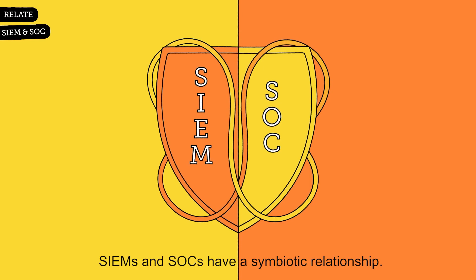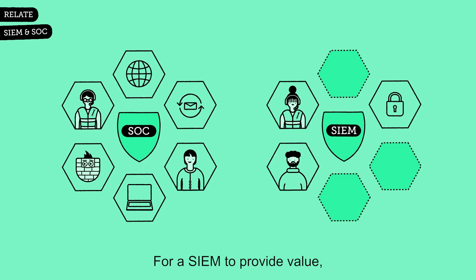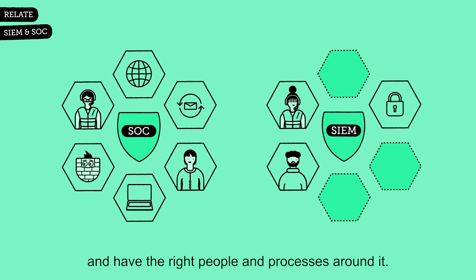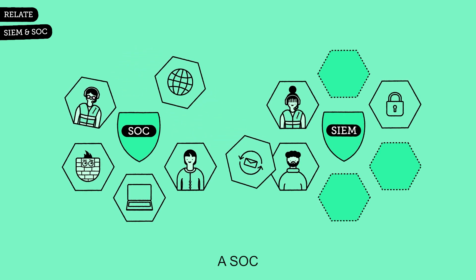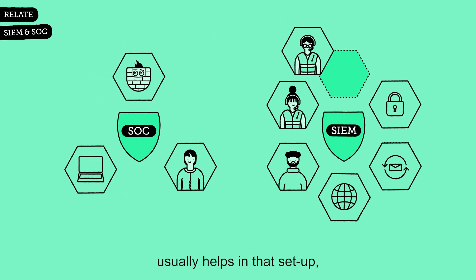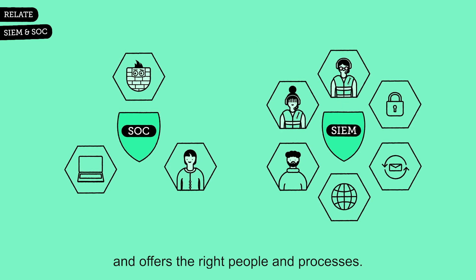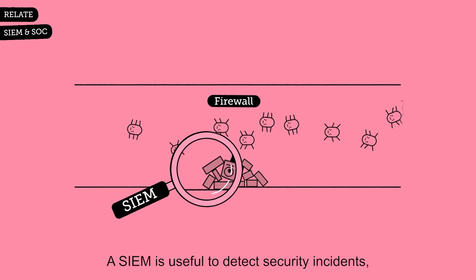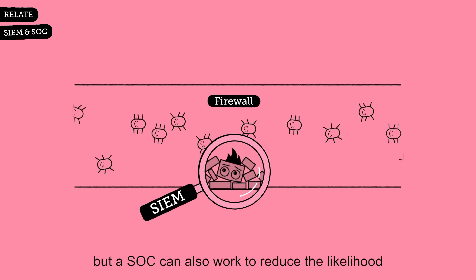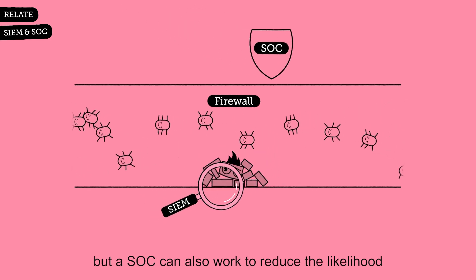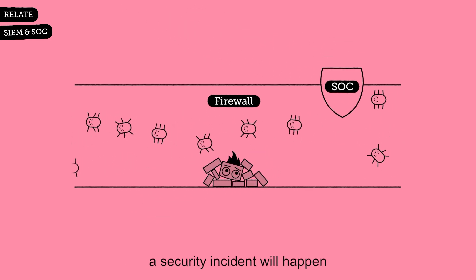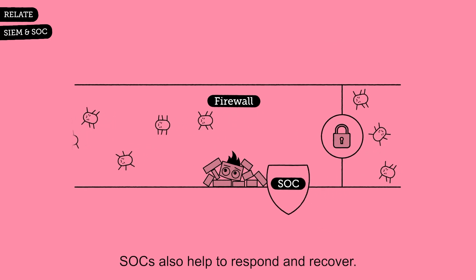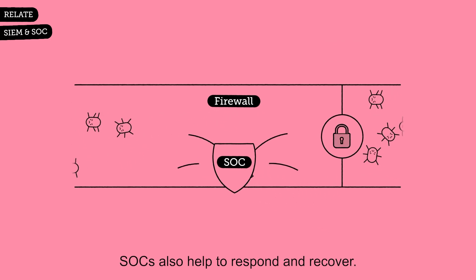SIEMs and SOCs have a symbiotic relationship. For a SIEM to provide value, it needs to be set up correctly and have the right people and processes around it. A SOC usually helps in that setup and offers the right people and processes. A SIEM is useful to detect security incidents, but a SOC can also work to reduce the likelihood a security incident will happen in the first instance. SOCs also help to respond and recover.